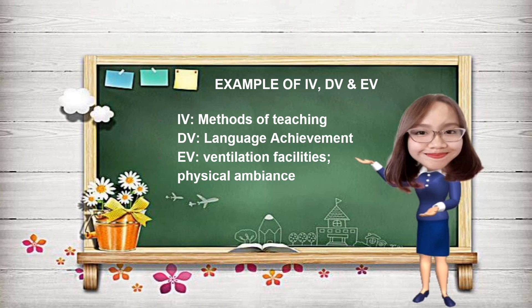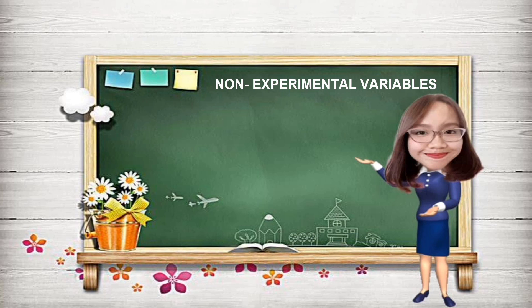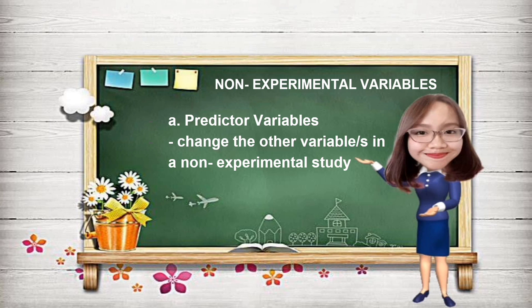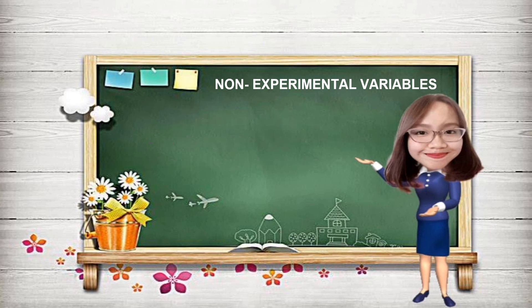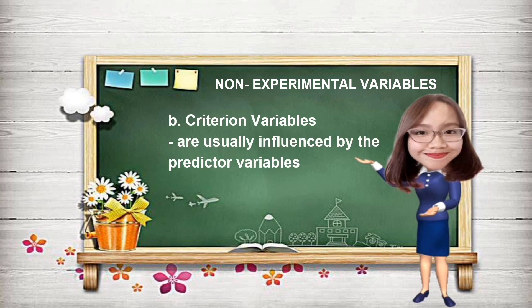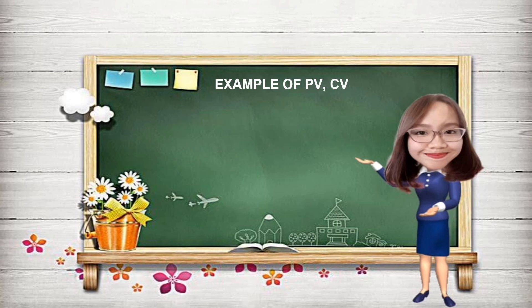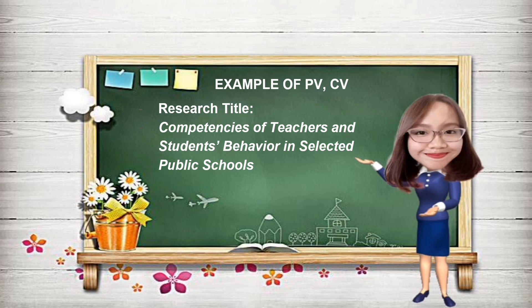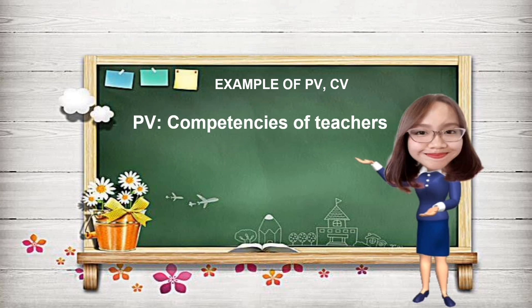Let us now discuss the last classification of variables: non-experimental variables. Under this classification are predictor and criterion variables. Predictor variables change the other variables in a non-experimental study, while criterion variables are usually influenced by the predictor variables. For example, in the research title 'Competencies of Teachers and Students' Behavior in Selected Public Schools,' the predictor variable is competencies of teachers, and the criterion variable is students' behavior.